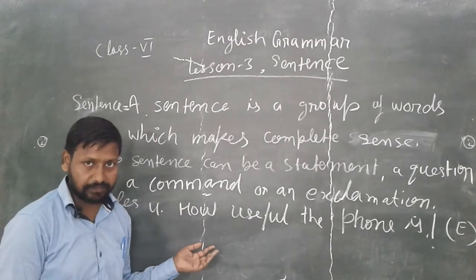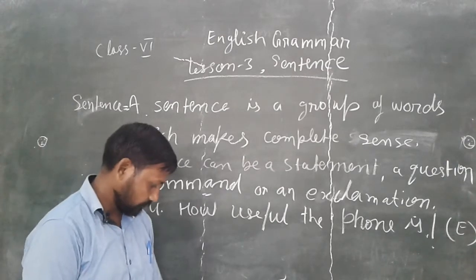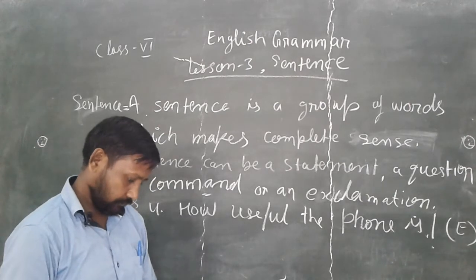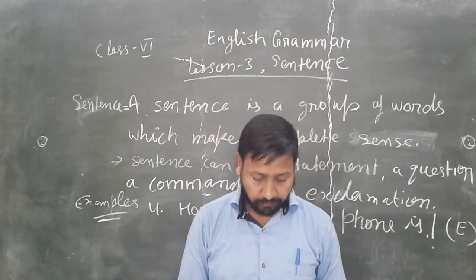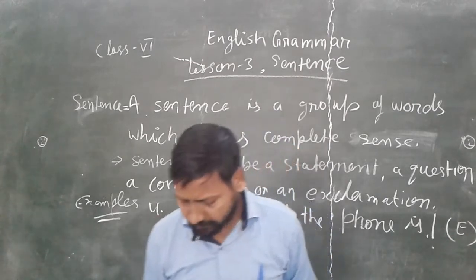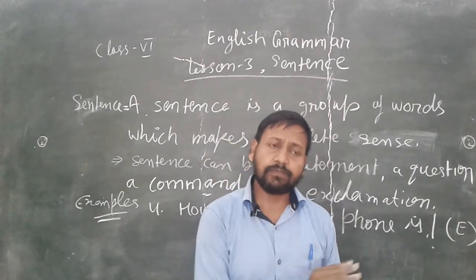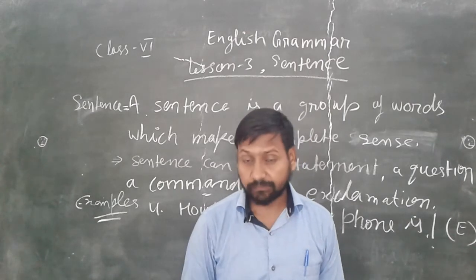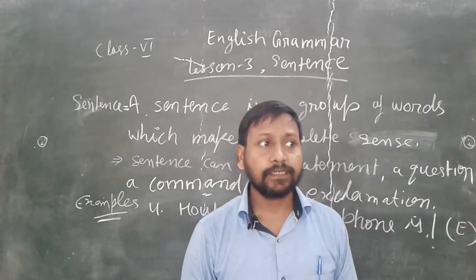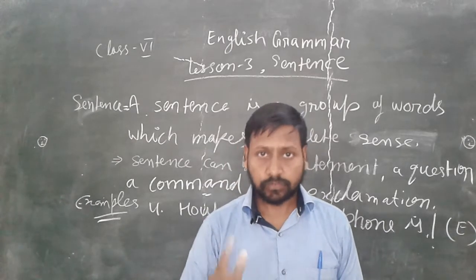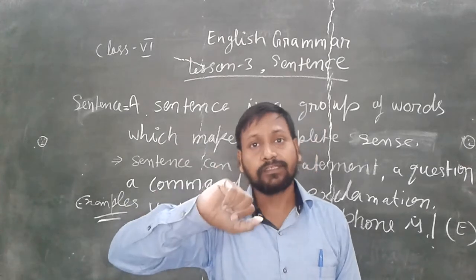I have given those examples. Now, some examples are also given in the book. First, statements: 'The moon goes round the earth.' A statement is a sentence said to another person telling about something — like 'My teacher used to teach me' or 'The moon revolves around the earth.' These are statements.